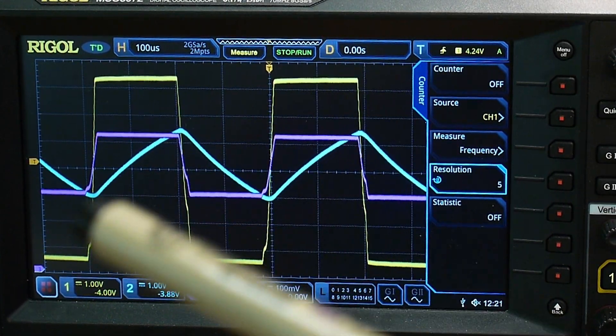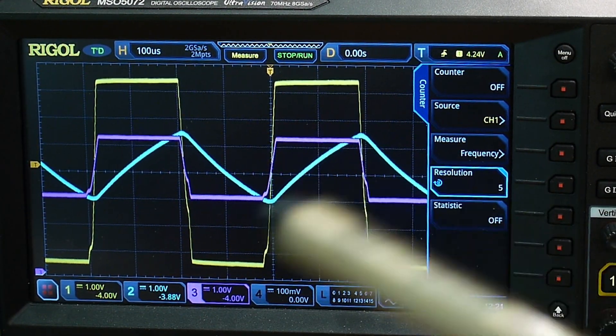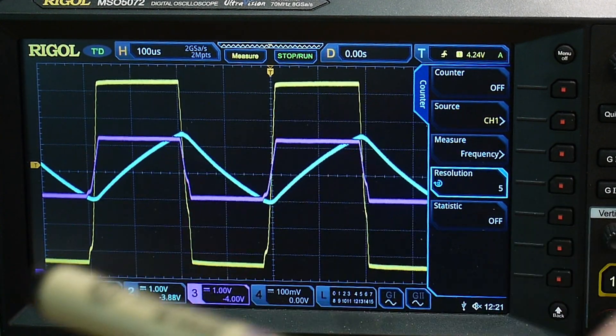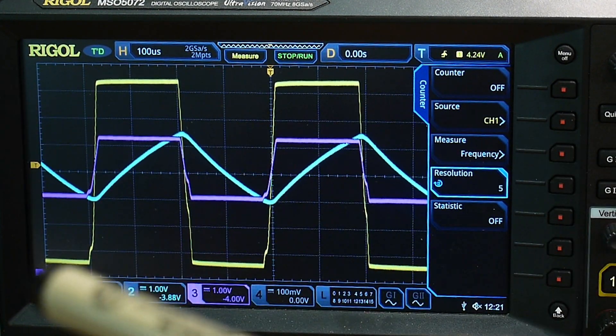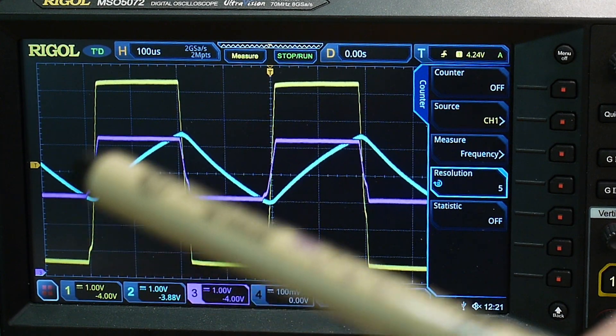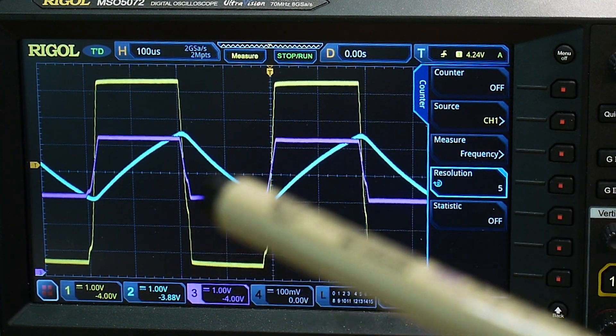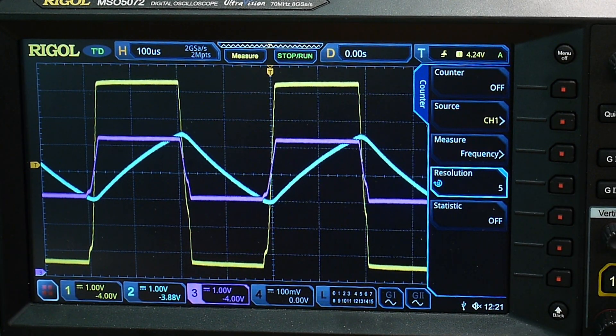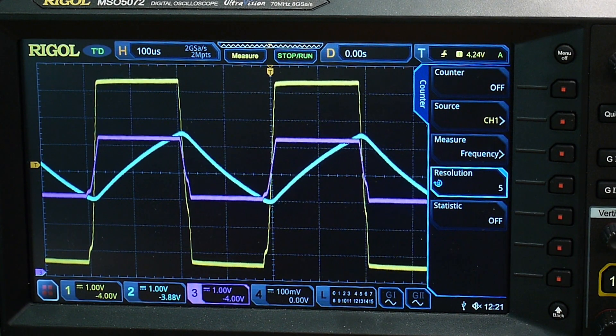The cyan trace is the capacitor. So it ramps up, then ramps down, then ramps up, then ramps down. How far does it ramp up? Well, the output is the yellow trace. So it goes between zero and plus nine. And so it goes to three volts, six volts, three volts, six volts. And then the magenta trace is the other, the plus input to the op amp.